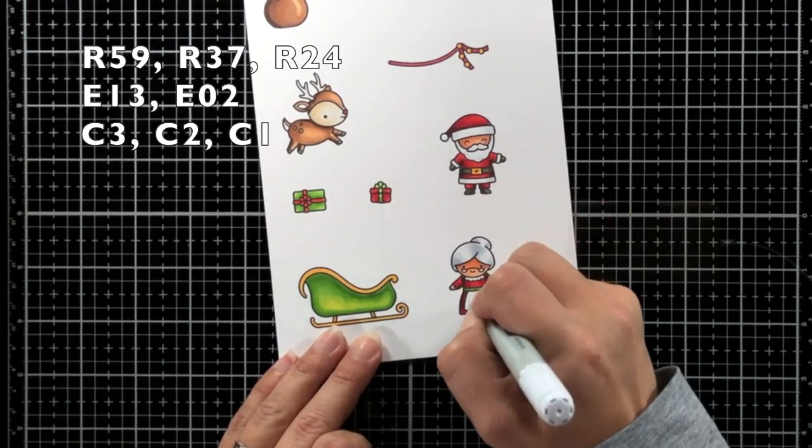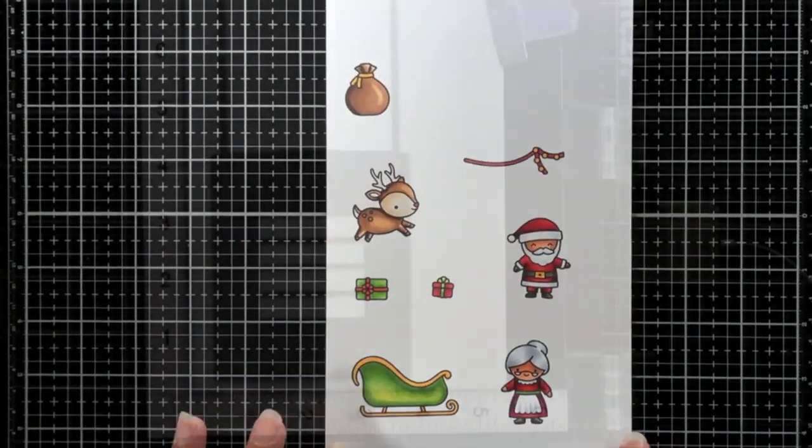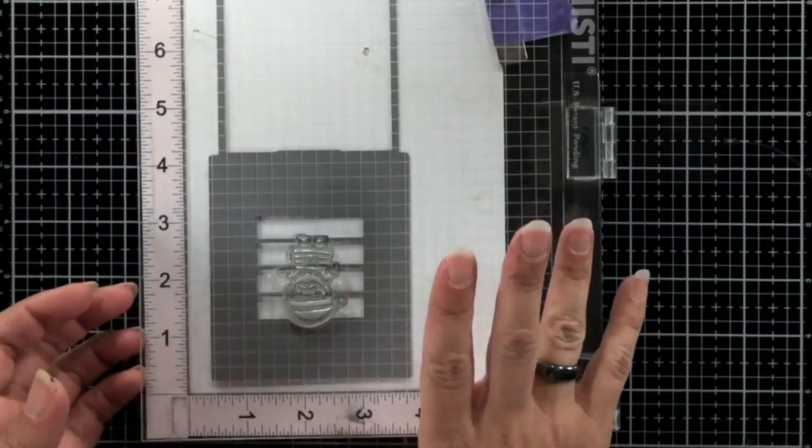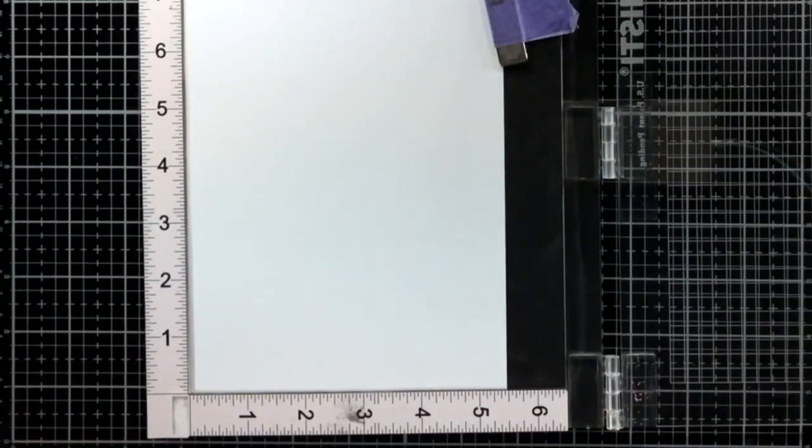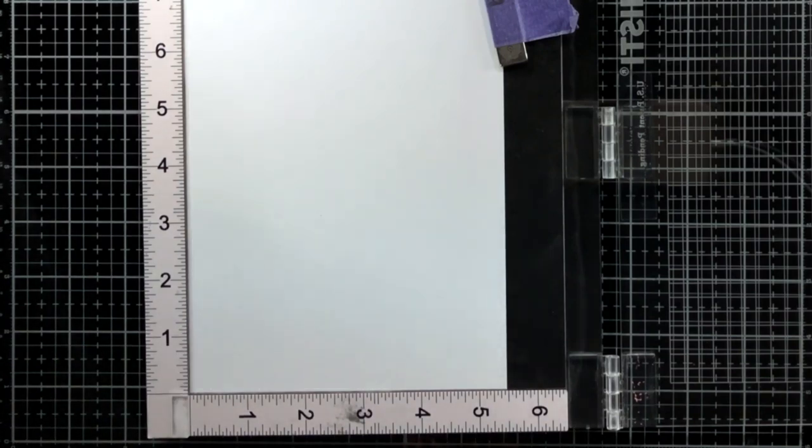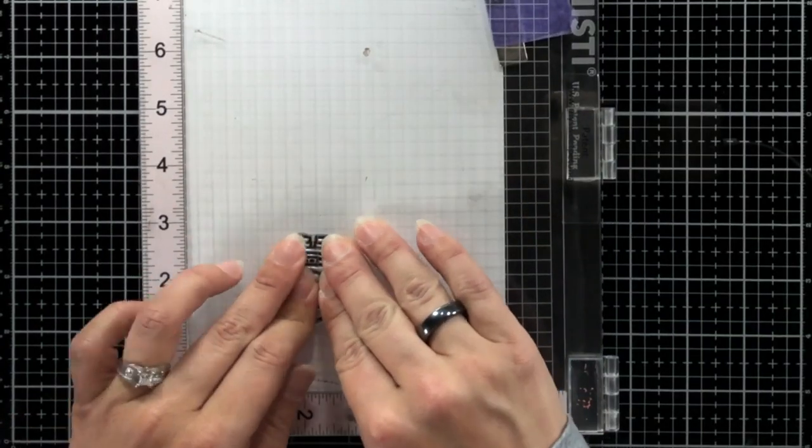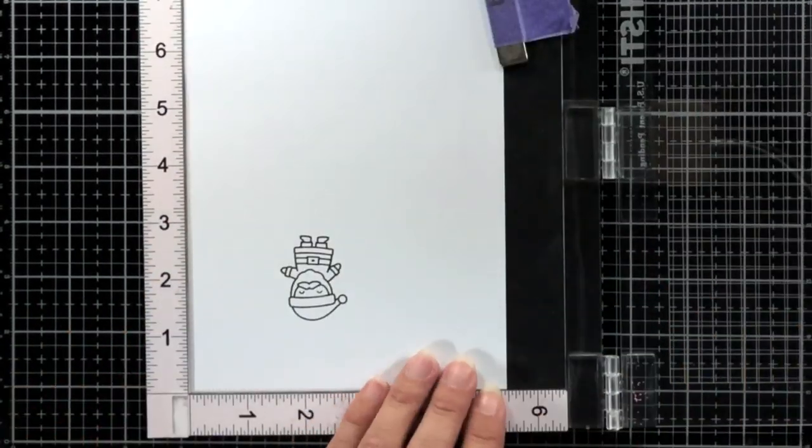Once I finished my coloring I'm just going to set that off on the side for now and work on my magic picture changer scene. I like to use the magic picture changer die to kind of set up my image on my cardstock only because I want to make sure I'm leaving enough room to die cut that out.